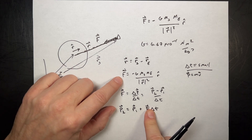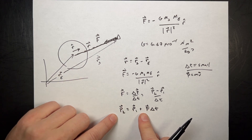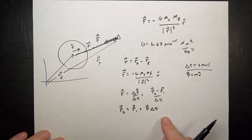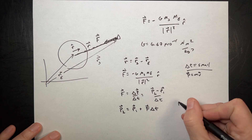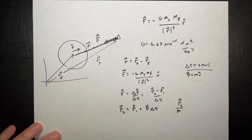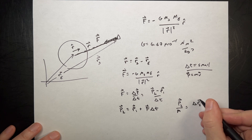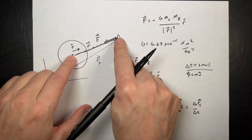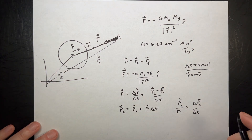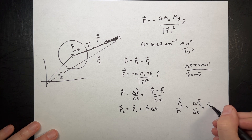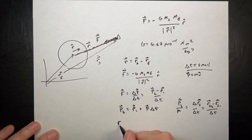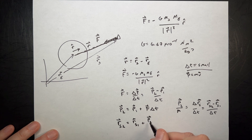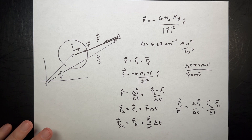This says that if I calculate the force and I know the momentum to begin with, I can find the momentum at the end of that small time interval. Now I can use this momentum, assume it's constant, and say P2 over M is the average velocity, equal to delta RS over delta T — the position of the spacecraft. That gives RS2 equals RS1 plus (P2 over M) times delta T.